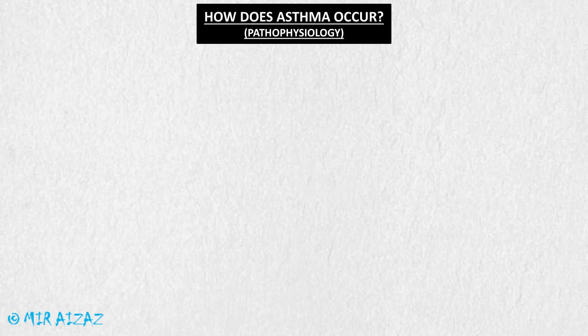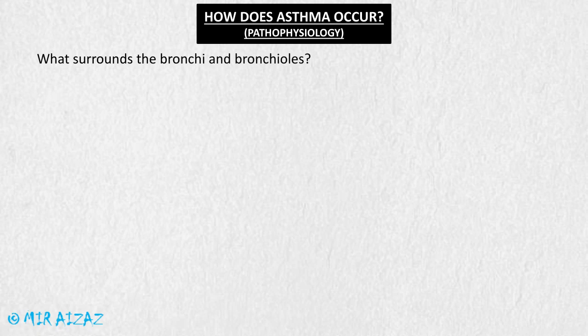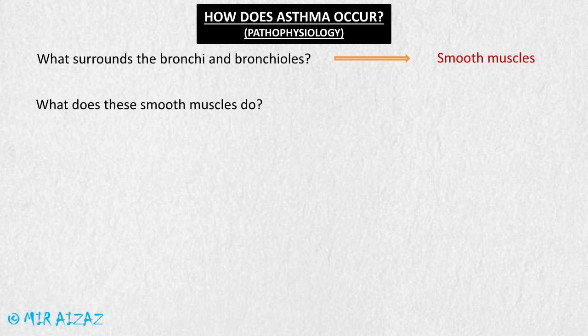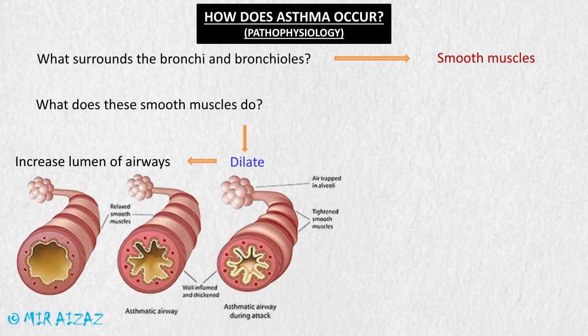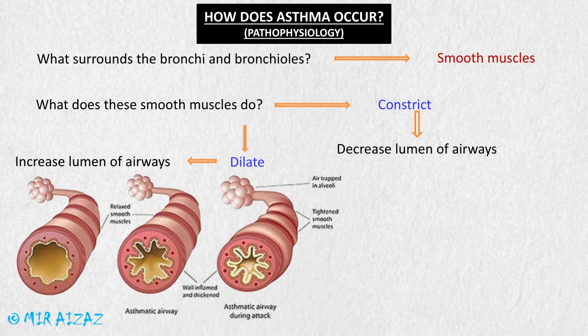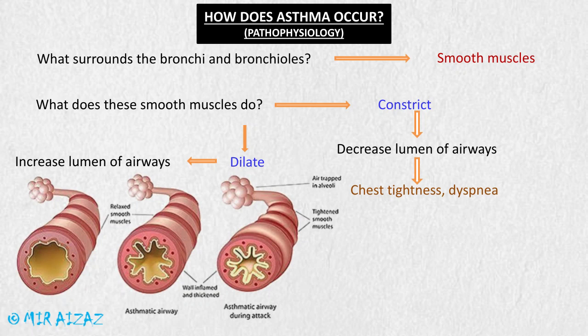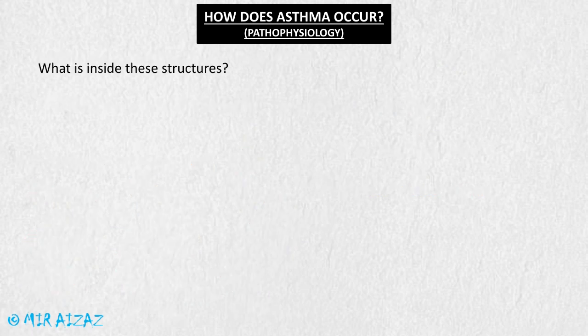Now how does asthma occur? Surrounding the bronchi and bronchioles are smooth muscles. These smooth muscles may either dilate, increasing the lumen of airways and making the passage of air easy, or they can constrict, decreasing the lumen of airways. When there is considerable decrease in the lumen, the patient may experience chest tightness and dyspnea, that is difficulty in breathing.